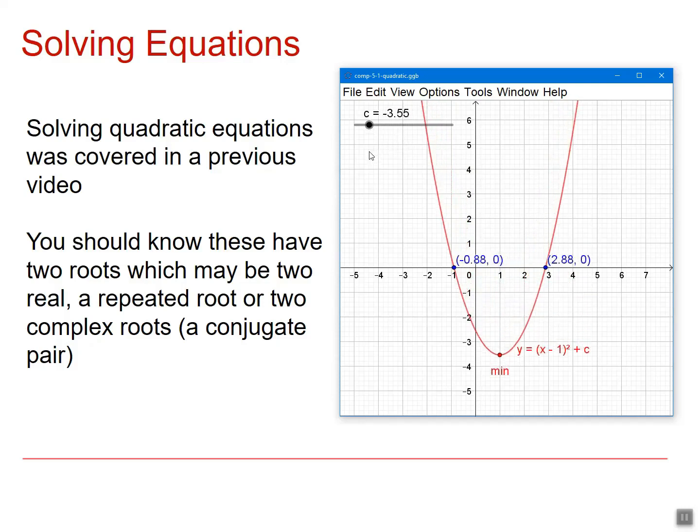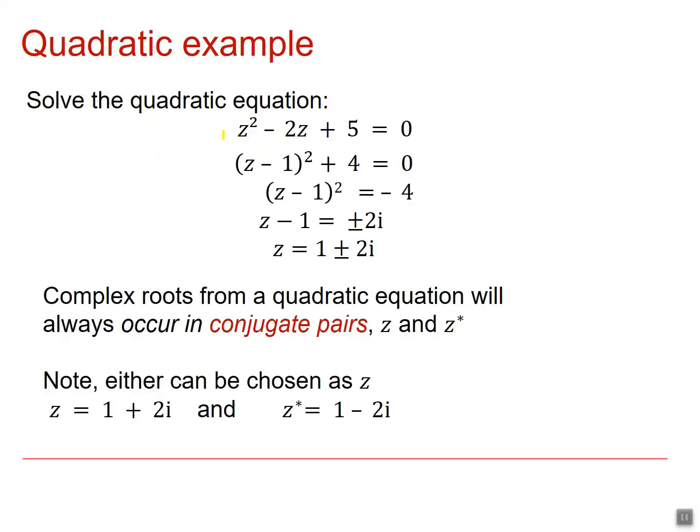Two complex roots, a repeated root, two real roots. So if we want to solve the quadratic equation, Z squared minus 2Z plus 5 equals 0, you can see here by completing the square, I get down to two roots for that equation, one plus or minus 2I.